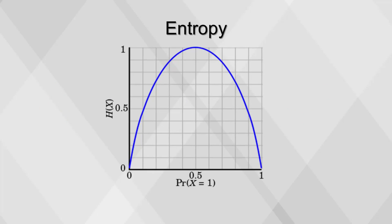In this graph, entropy is maximized when the probability is 50%. When the probability is zero or 100%, there is zero entropy. By adding information, we can reduce entropy and gain certainty.